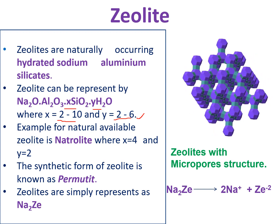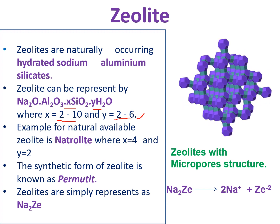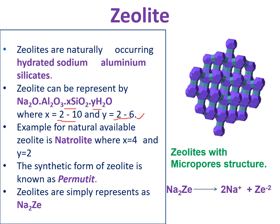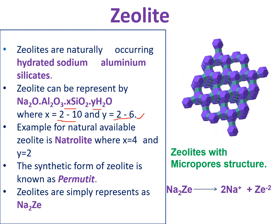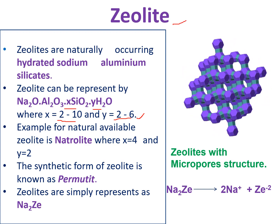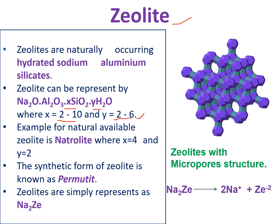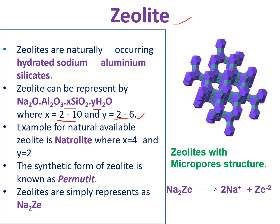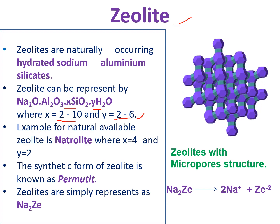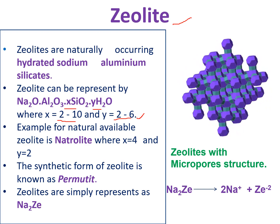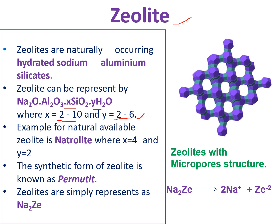These zeolites are naturally occurring — for example, clay is a naturally occurring zeolite, called naturalite. All naturally available zeolites are called naturalites. Zeolites can also be prepared in the laboratory; those are called permutites. That's why this process is also called the permutite process. Naturally available zeolites are limited in application because of less uniform pore texture, so we prepare zeolites in the laboratory to generate a perfect pore texture. Those are called permutites.